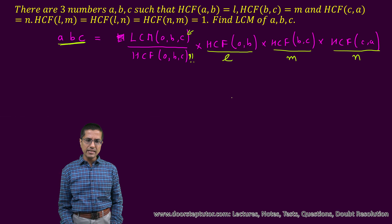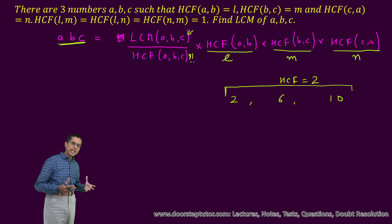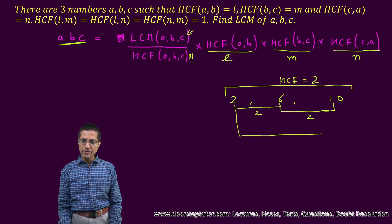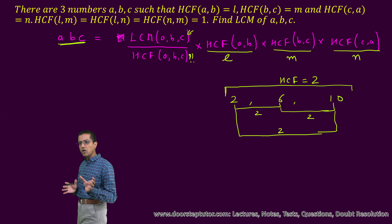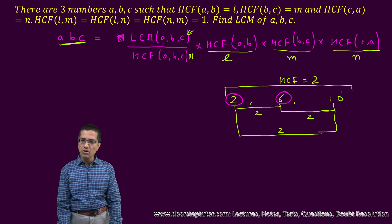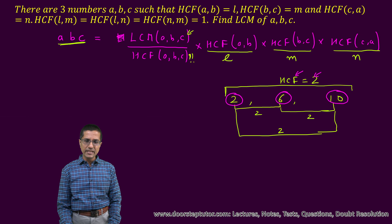Let us take a very simple example: three numbers 2, 6 and 10. The SCF of these three numbers taken together comes out to be 2. Now let us also take their pairwise SCFs. The pairwise SCF of the first two is 2, the pairwise SCF of the second pair is also 2, and the pairwise SCF of the third pair is also 2. So if there is a common factor across these three numbers, the SCF would equal that factor. Second, if I take the SCF of the SCFs, that factor would appear.